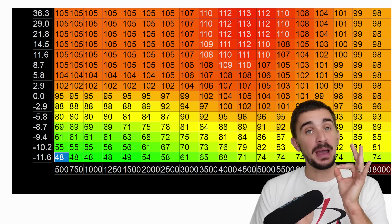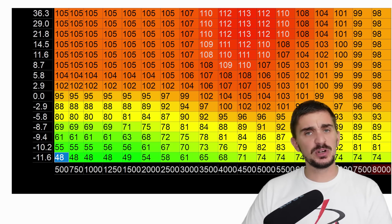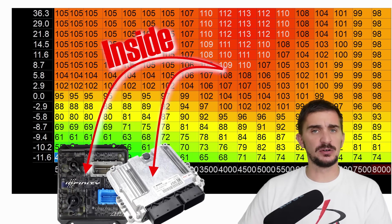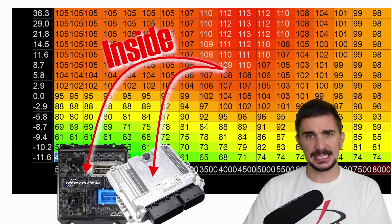A volumetric efficiency or VE map is something that you'll find inside pretty much every modern ECU or engine control unit. Doesn't matter if it's aftermarket or OEM, it's in there.